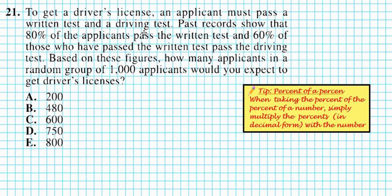Let's take a look at problem 21. It reads: To get a driver's license, an applicant must pass a written test and a driving test. Past records show that 80% of applicants pass the written test, and 60% of those who have passed the written test pass the driving test. Based on these figures, how many applicants in a random group of a thousand applicants would you expect to get driver's licenses?